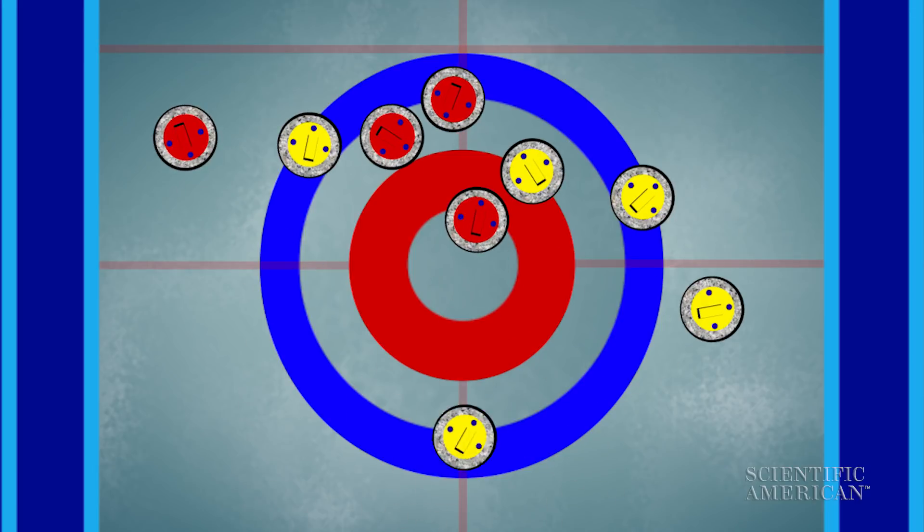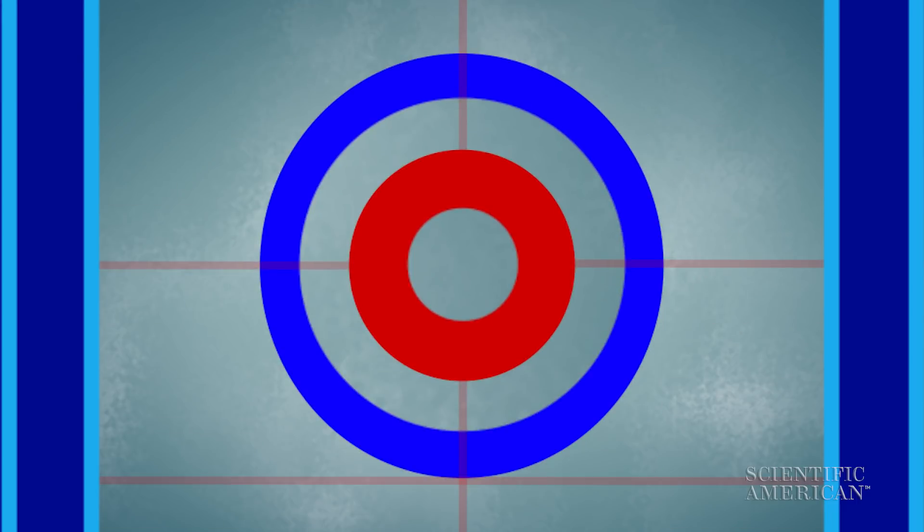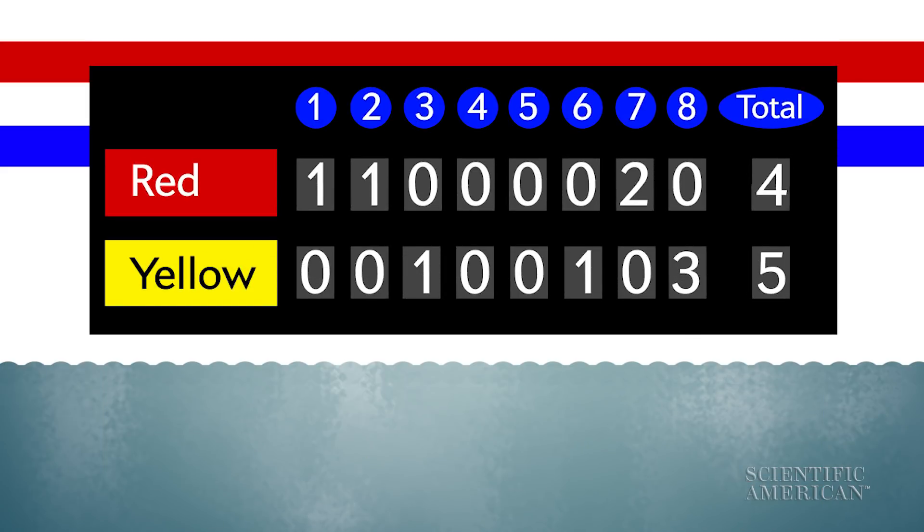After both teams throw eight stones, the points are tallied and the sheet is cleared. The players start a second round. After eight or ten rounds, whichever team has the most points wins.